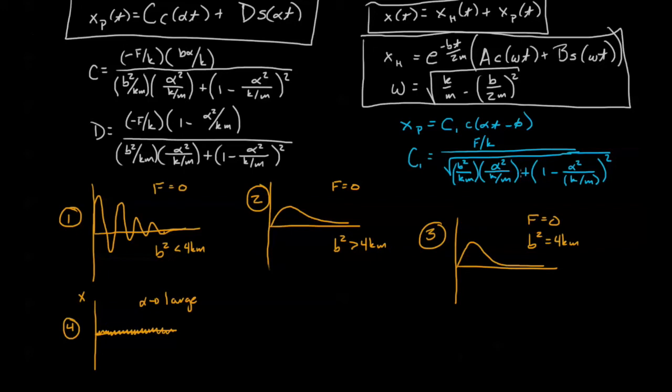Now that said, we can look in here and we can see that when alpha, or the driving frequency, gets really big, this term gets big, this term gets big, and as a result the denominator is large and C, which expresses the amplitude of the oscillation, goes down.